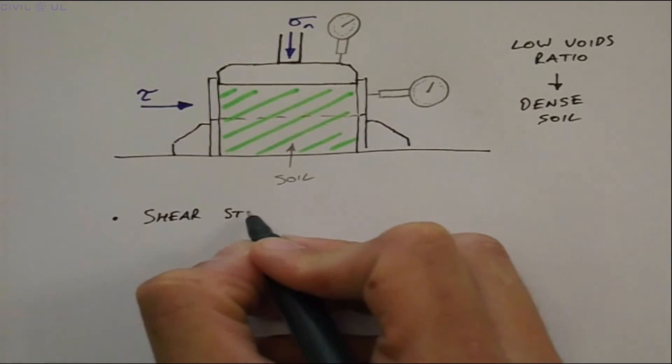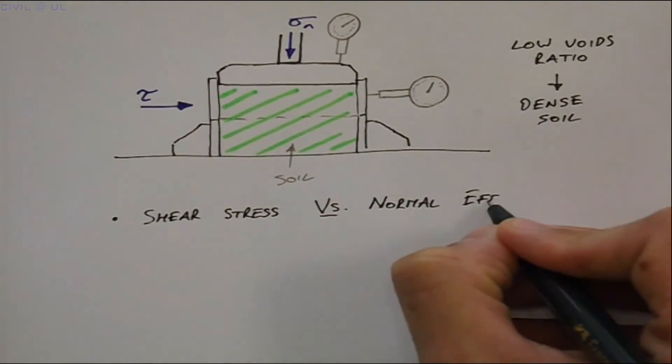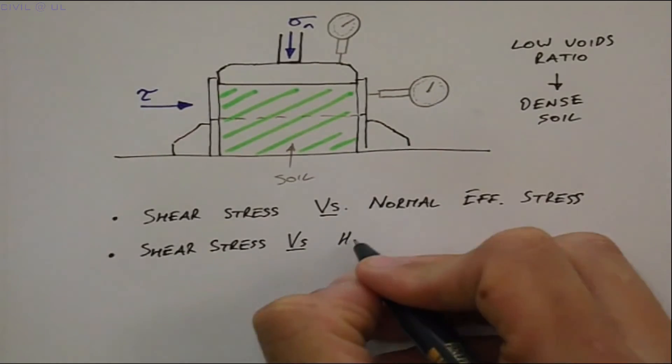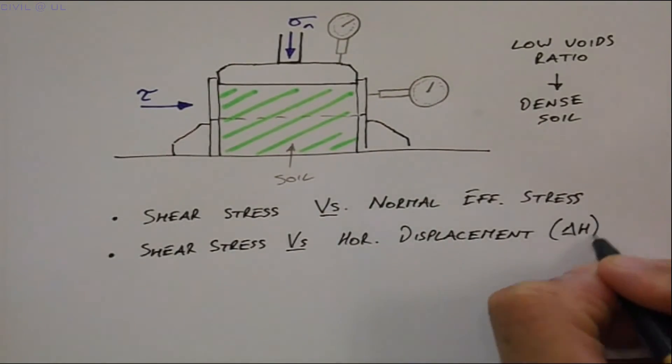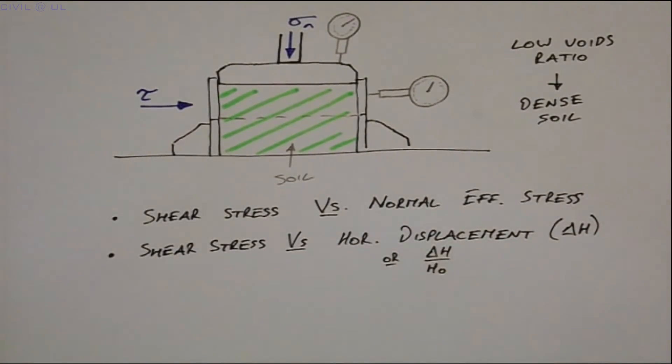The shear stress versus normal effective stress. Shear stress versus horizontal displacement, delta H, or horizontal strain, delta H over H0. And the vertical displacement, delta V, against the horizontal displacement.